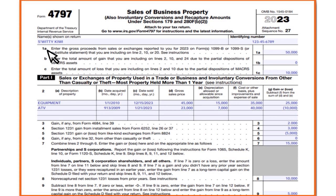On line 1, you want to enter the gross proceeds from sales or exchanges reported to you this year. In this hypothetical scenario, we're putting $50,000. Line 2 does not apply to us. On line 3, we're putting $10,000, which relates to the total amount when it comes to losses. Part 1 is pretty straightforward.